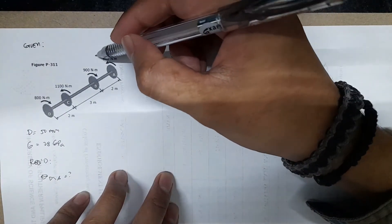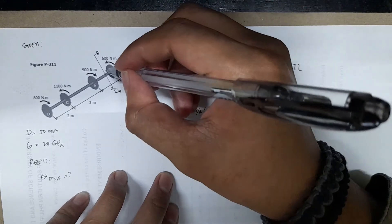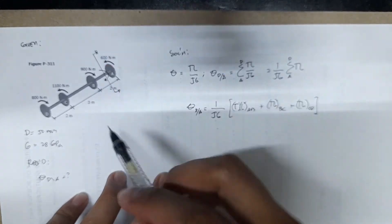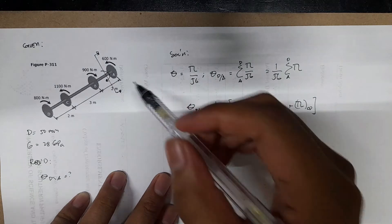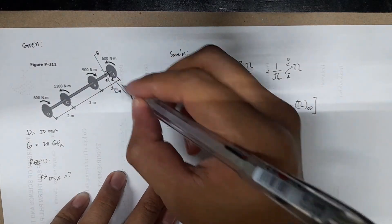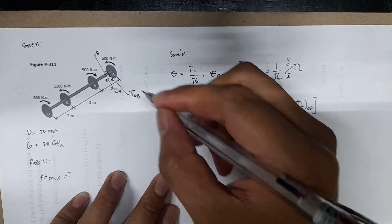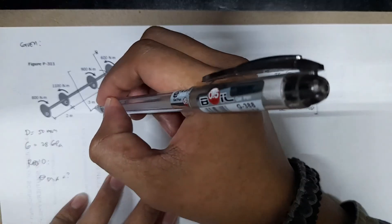So first we'll consider the segment, we'll consider the right portion. We'll have a resisting moment here, which is equal to TAB. On this portion, we'll also consider the right side.